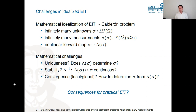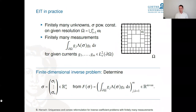Many important results have been obtained on the uniqueness and stability of the Calderón problem. In the infinite-dimensional setting it is exponentially ill-posed, but once you restrict the solution space you can show stability results. The practical question is: what do these infinite-dimensional answers tell us about practical EIT with finitely many unknowns and finitely many measurements?